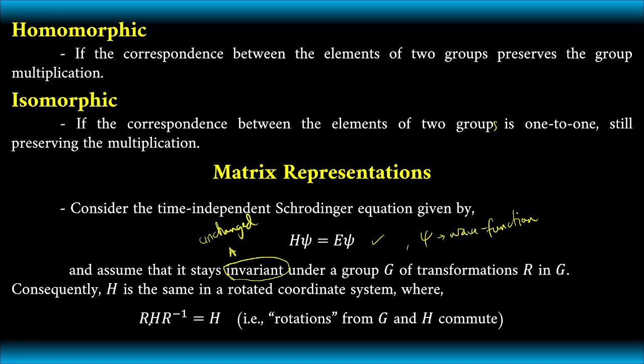So, if we have this rotation transformation or transformation due to this rotation operator, for example, or rotation matrix, operating on the Hamiltonian and multiplied to the inverse of this operator, obviously, this is still equal to the Hamiltonian. That is rotations from the group. And we have to consider here that H actually commute.